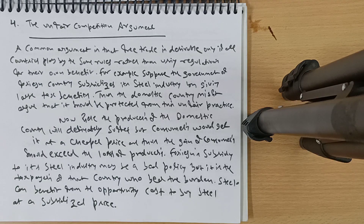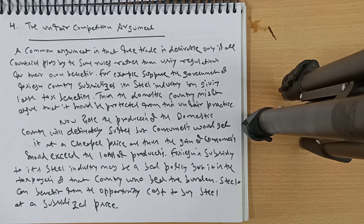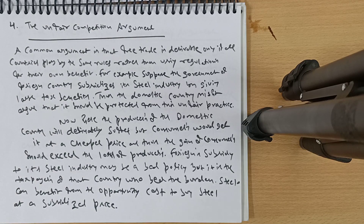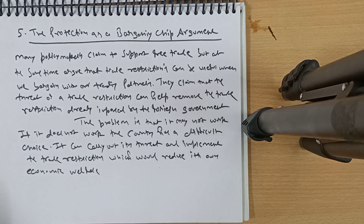The unfair competition argument: free trade is desirable only if all countries play by the same rules. For example, if a foreign government subsidizes its steel industry with large tax benefits, the domestic country might argue for protection against that unfair practice. However, domestic consumers still get steel at a cheaper price, and consumer gains should exceed producer losses. The foreign subsidy is actually a bad policy for that country — it's their taxpayers who bear the burden. Steelo can still benefit by buying steel at a subsidized price.